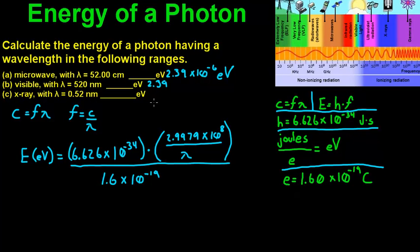You can probably see a trend here. They're both 2.39. You've went from negative 6th to just 2.39, and as you can see, we've went from 0.52 to 520 times 10 to the negative 9th.